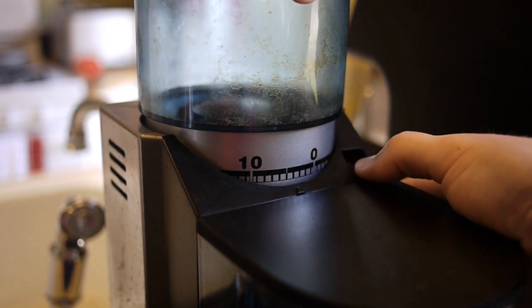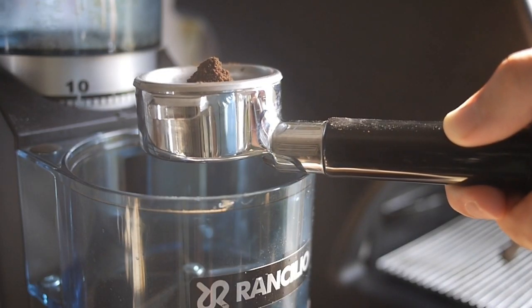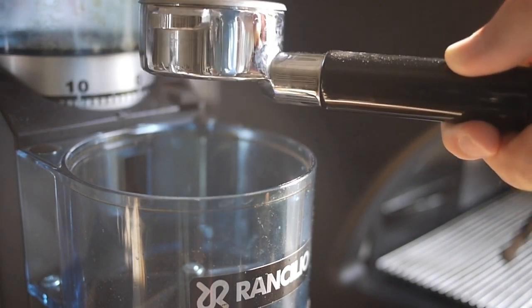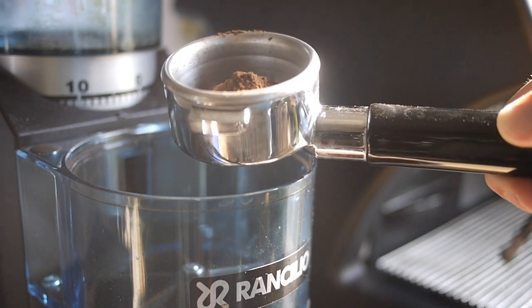Moreover, I wish that the grinder was either stepless or had finer steps. While you can compensate during drink preparation by tapping the portafilter more or less and futzing with your tamp pressure, essentially having only five settings is quite a limitation for fresh beans.